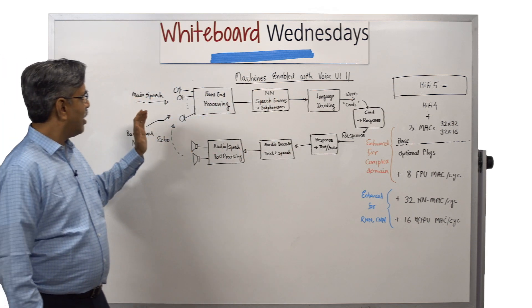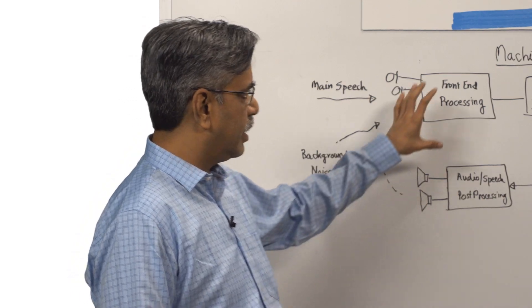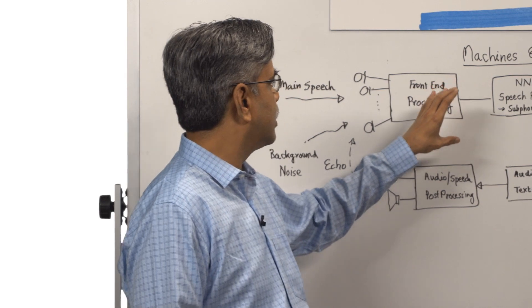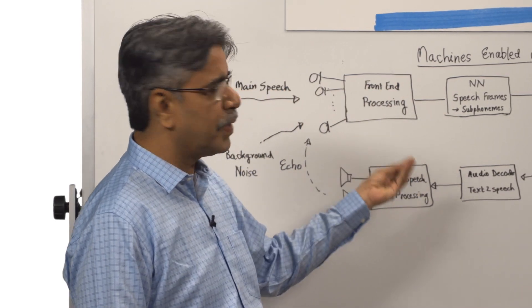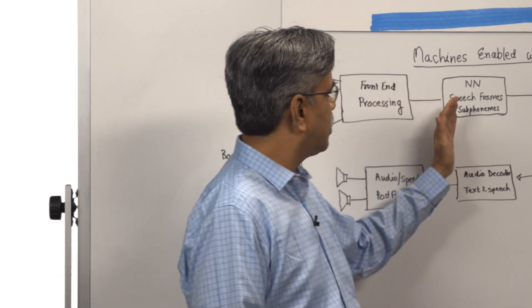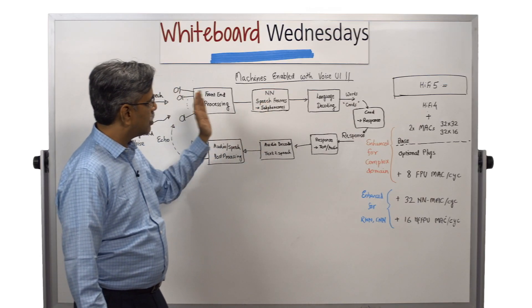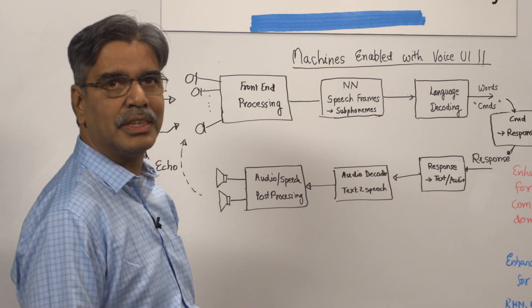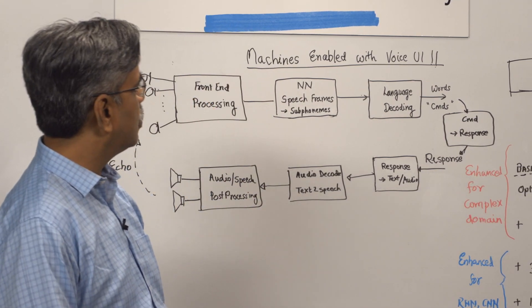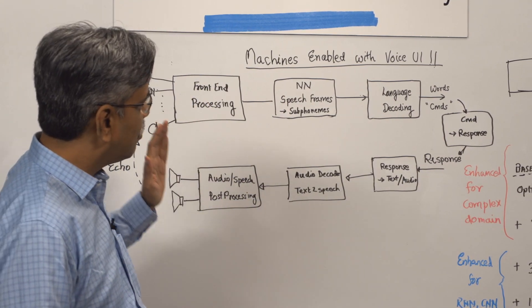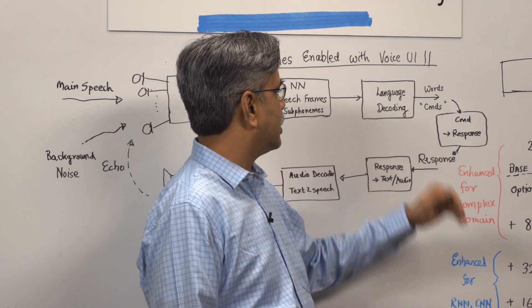It picks up the main speech, does front-end signal conditioning to clean up the speech, forms mono speech frames, and those speech frames using neural networks are mapped into sequence of phonemes or sub-phonemes. Those sub-phonemes are then fed to a language decoding module which will convert the sequence of sub-phonemes into words and commands.